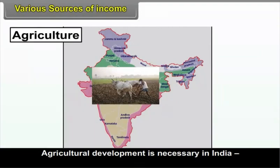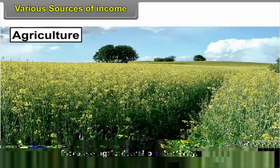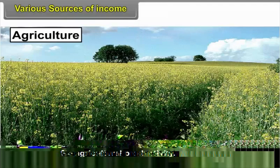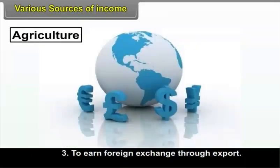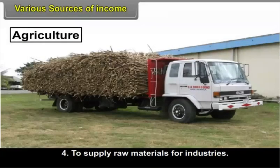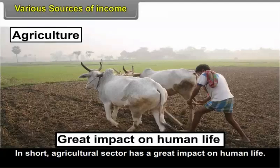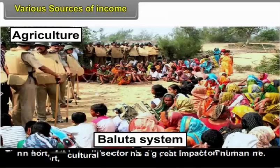Agricultural development is necessary in India to increase agricultural productivity, create employment opportunities, earn foreign exchange through export, and supply raw materials for industries. In short, the agricultural sector has a great impact on human life. The origin of this traditional agriculture is found in the Baluta system.